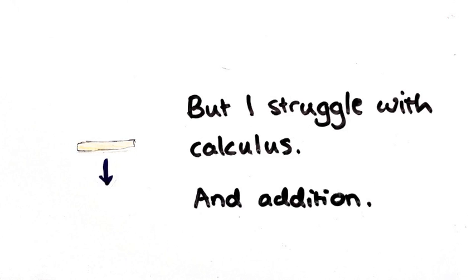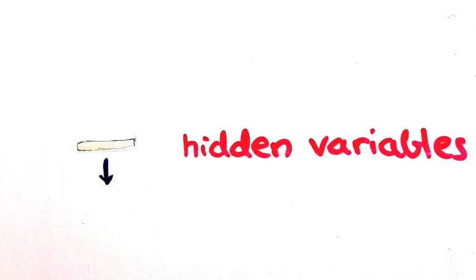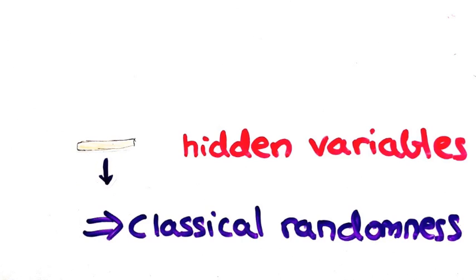It only looked random because there were these hidden variables I didn't take into account. We'll call this classical randomness because this is the only type of randomness allowed in classical physics. Things only look random because we don't know all the factors influencing them.